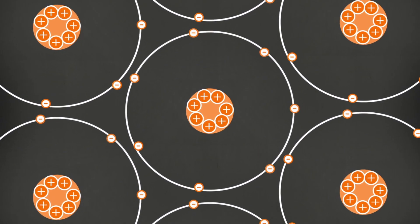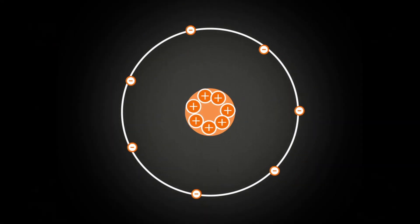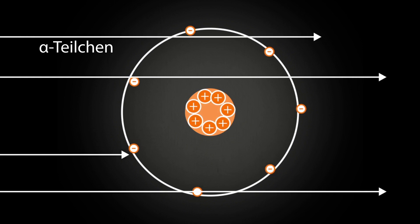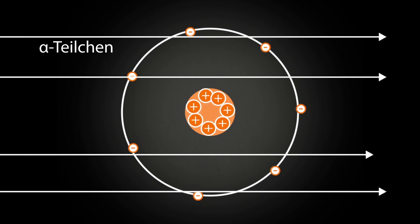Electrons are very light, and do not present a significant obstacle for alpha particles. An alpha particle will move onwards practically undisturbed. Only heavy, positively charged atomic nuclei can deflect alpha particles.